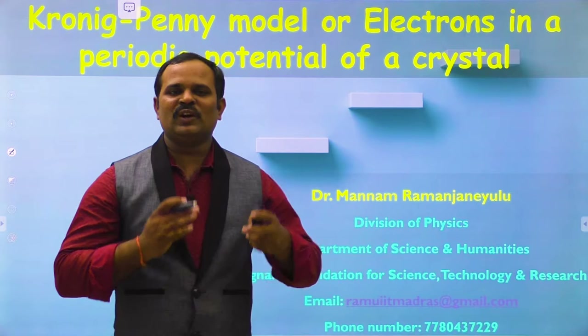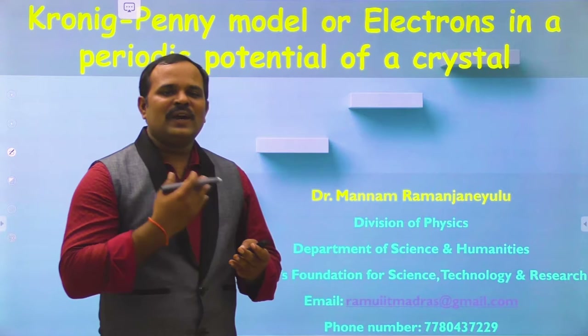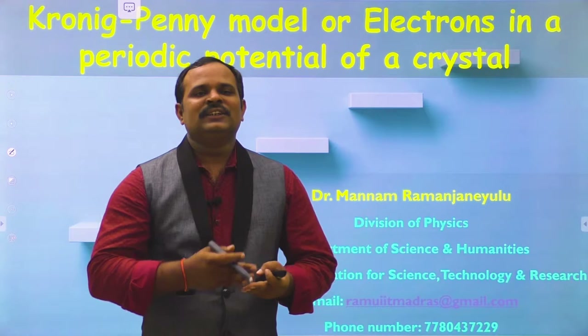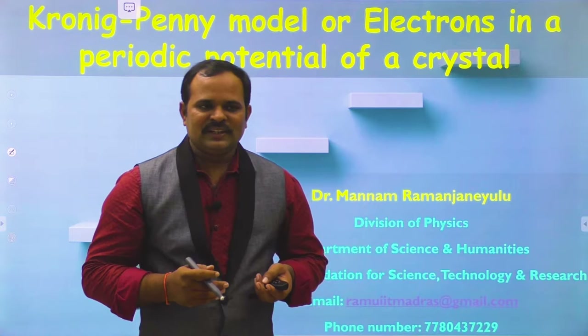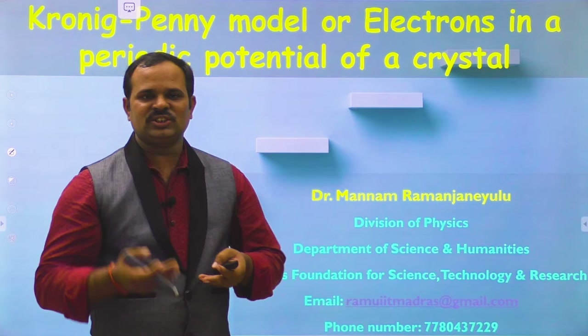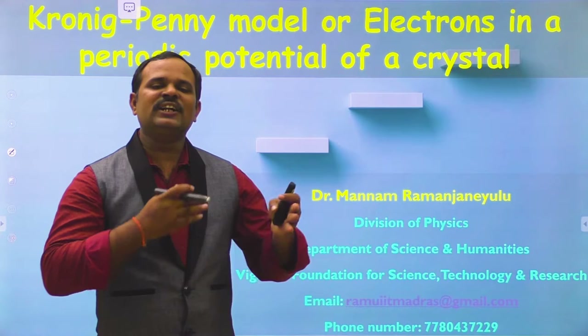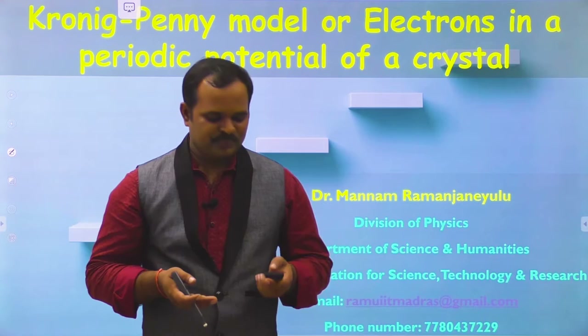Hello everyone, welcome back. In the last lecture we saw the failures of quantum mechanics — specifically, that the electron is moving in a constant potential inside a metal. But this is not true; when an electron moves inside a metal it experiences a varying potential. That was introduced by Bloch, and we also saw the general solutions for the Schrödinger wave equation, that is the Bloch solutions.